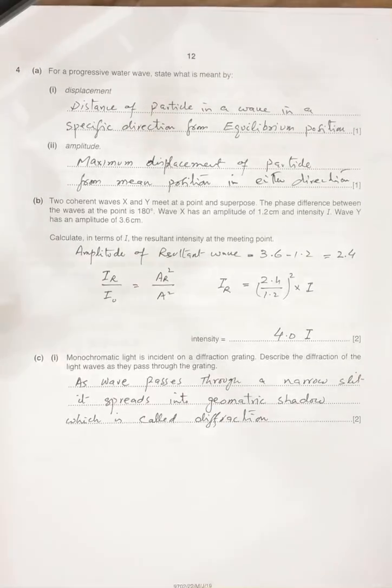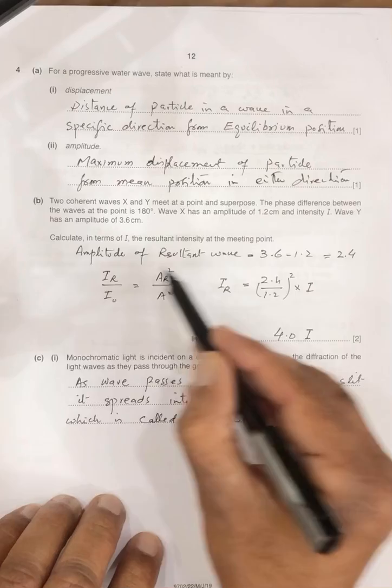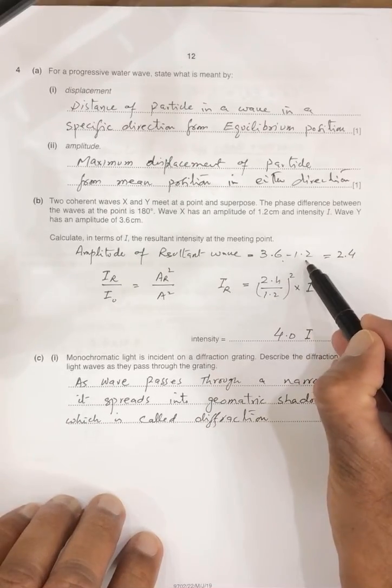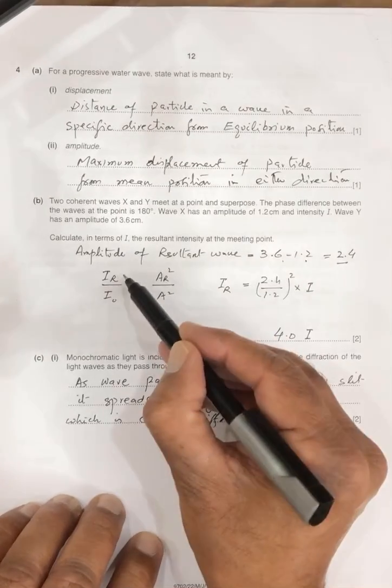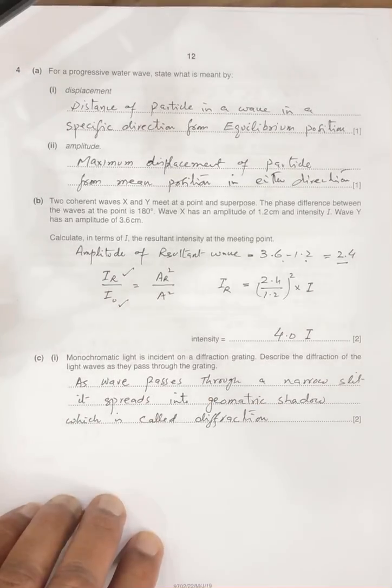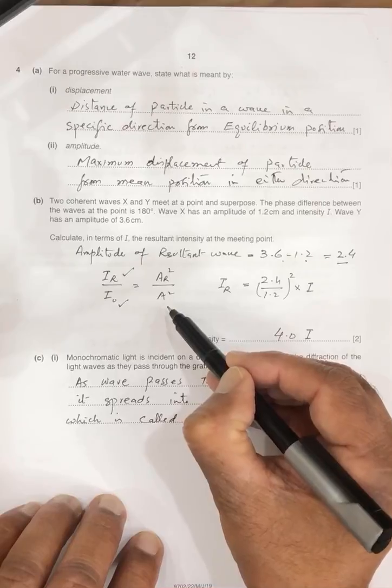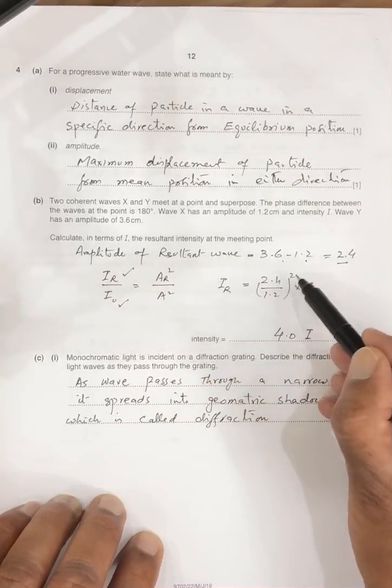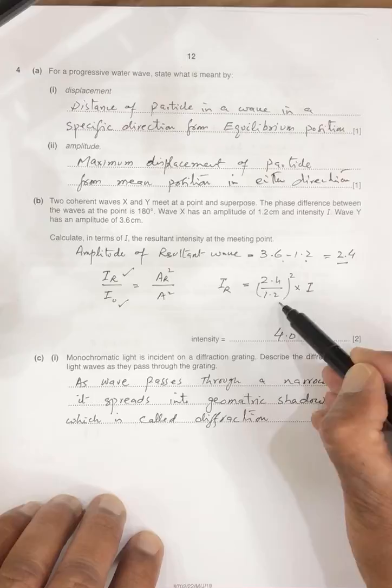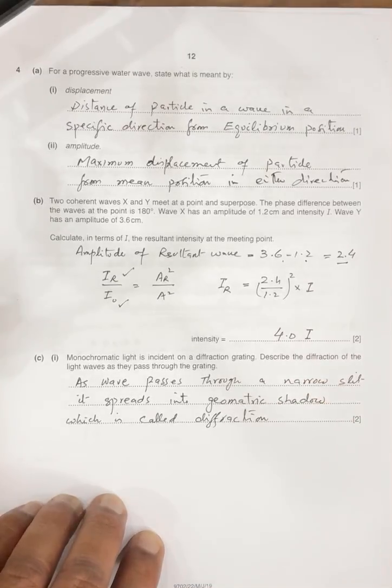Next question is two coherent waves x and y meet to the point, and their phase difference is 180. Wave x has amplitude 1.2 intensity i, wave y has amplitude of 3.6. We have to calculate the resultant intensity. So amplitude of the resultant wave, 3.6 minus 1.2, 2.4. So resultant intensity divided by original intensity, amplitude of resultant square divided by amplitude of the actual wave. So i r is equal to 2.4 square divided by 1.2 square times i, it is 4.0 intensity.